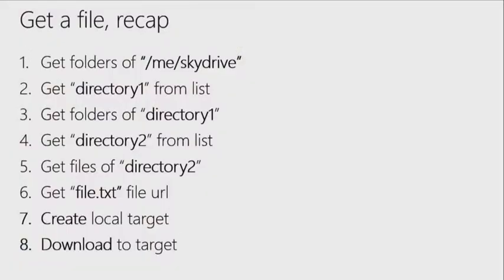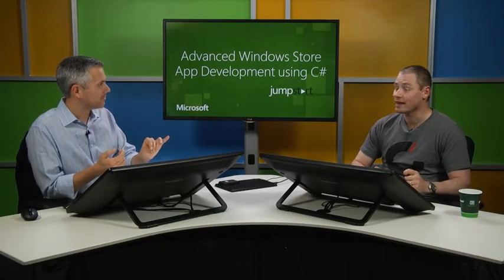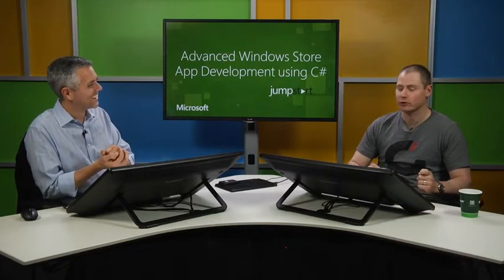To recap the whole flow: first, get the folders in me/SkyDrive. Find directory1 from that list. Get the folders in directory1 to find directory2. Get the files in directory2. Match the filename we're looking for to get its download URL. Create a local storage file as the download target. Then use backgroundDownloadAsync to download the file from SkyDrive and place it into that local target file. It is that simple.